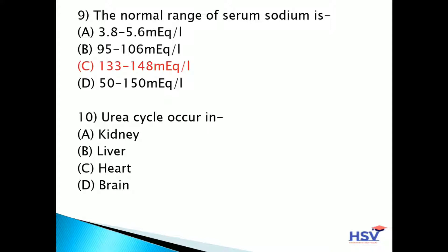Question 10: where does the urea cycle occur? Option A: kidney. Option B: liver. Option C: heart. Option D: brain. The answer is option B — liver. The urea cycle occurs in the liver.